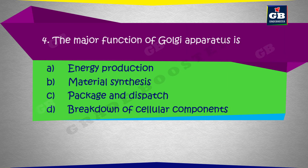The major function of Golgi apparatus is: a) energy production, b) material synthesis, c) package and dispatch, d) breakdown of cellular components.